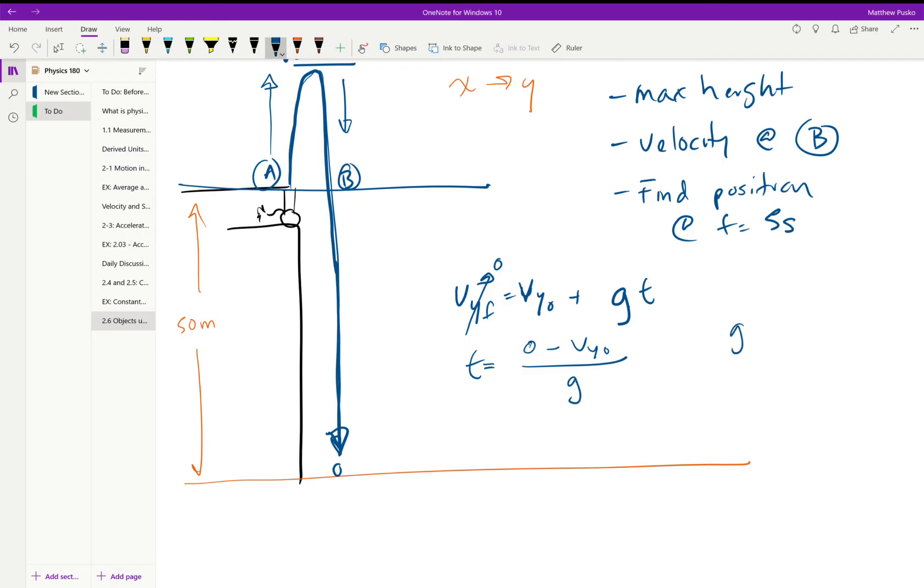And we're going to want to use a negative 9.81 for g meters per second squared, until we get to forces. And then we're going to just put a positive 9.81 in there and we'll work off the free body diagram.